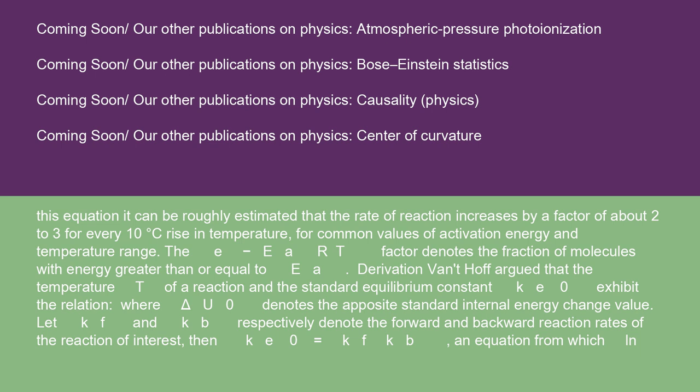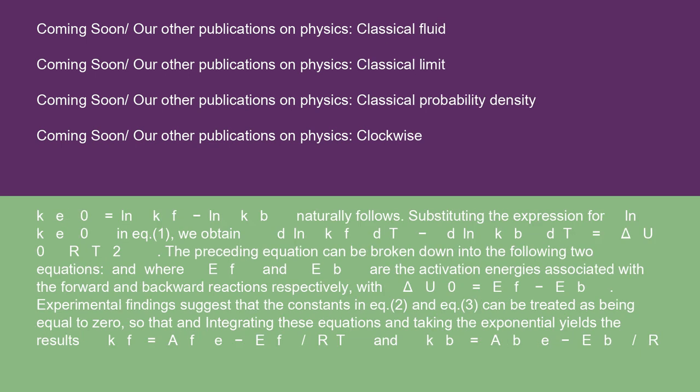Derivation: Van't Hoff argued that the temperature T of a reaction and the standard equilibrium constant K_e0, exhibit the relation where ΔU0 denotes the opposite standard internal energy change value. Let Kf and Kb respectively, denote the forward and backward reaction rates of the reaction of interest. Then Ke0 equals Kf/Kb, an equation from which ln Ke0 equals lnKf minus lnKb naturally follows. Substituting the expression for lnKe0 in equation 1, we obtain d(lnKf)/dT minus d(lnKb)/dT equals ΔU0/RT^2. The preceding equation can be broken down into the following two equations, where Ef and Eb are the activation energies associated with the forward and backward reactions respectively, with ΔU0 equals Ef minus Eb.